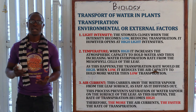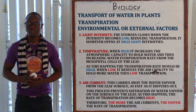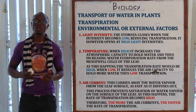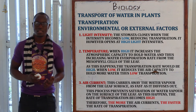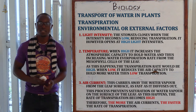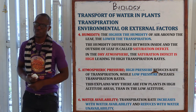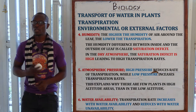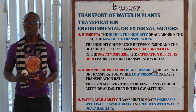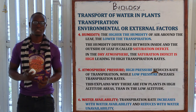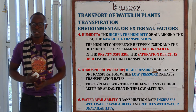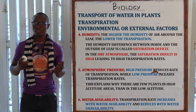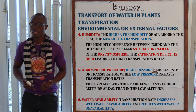Air currents carry away water vapor as it diffuses out of the leaf, preventing saturation on the surface. The higher the air currents, the higher the rate of transpiration; the lower the air currents, the lower the rate. Regarding humidity, the higher the humidity around the leaf the lower the rate of transpiration. The humidity difference between the inside and outside of the leaf is called saturation deficit. In a dry atmosphere the saturation deficit is very high, leading to a high amount of transpiration.